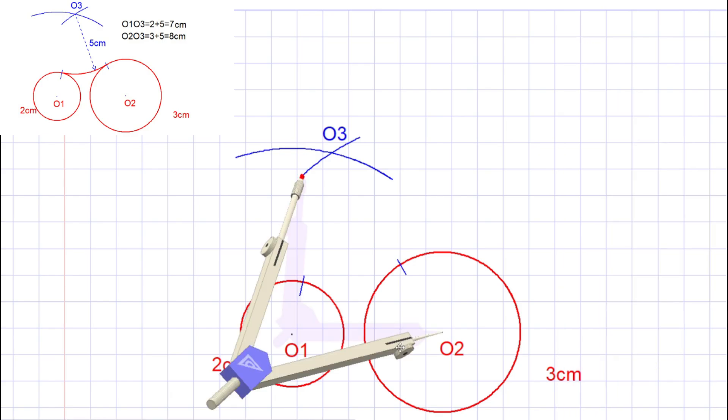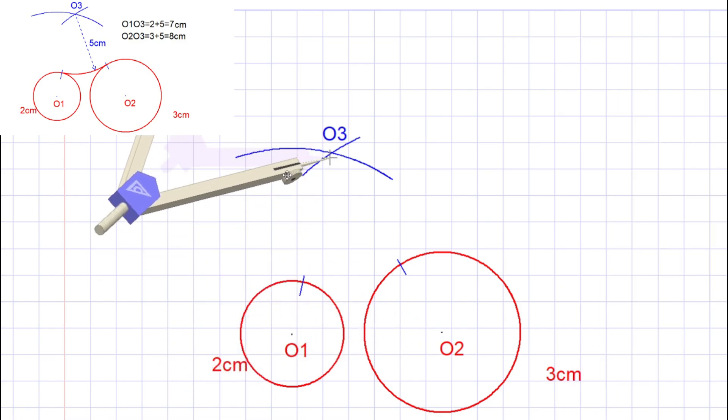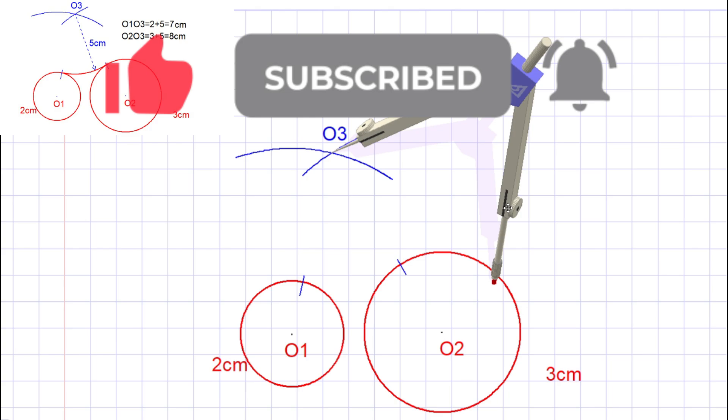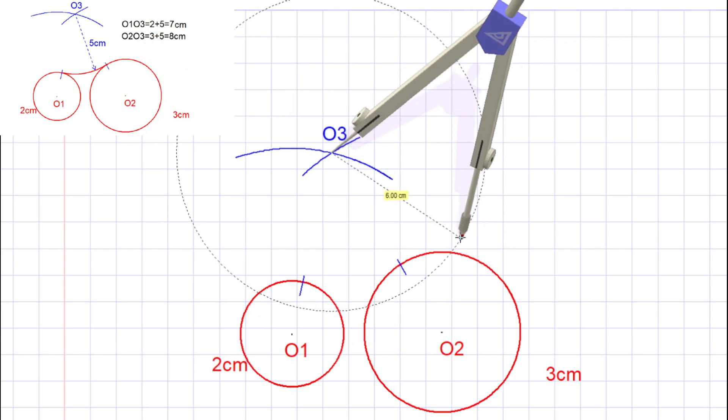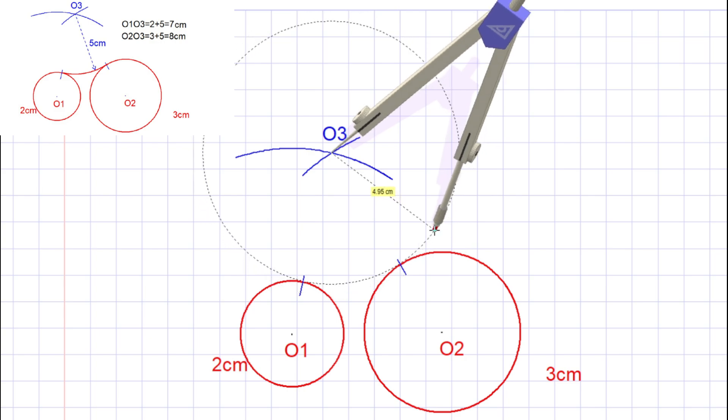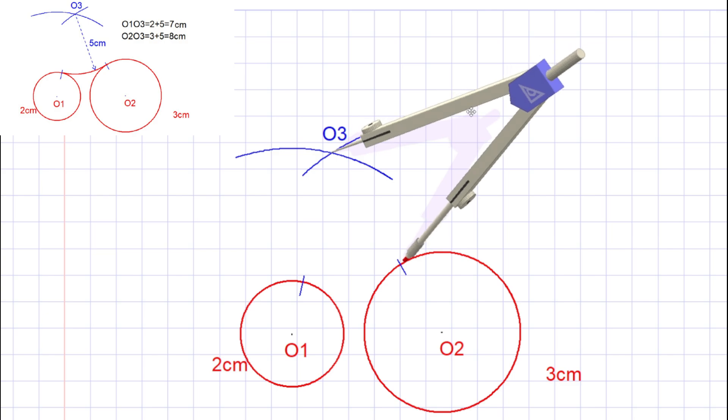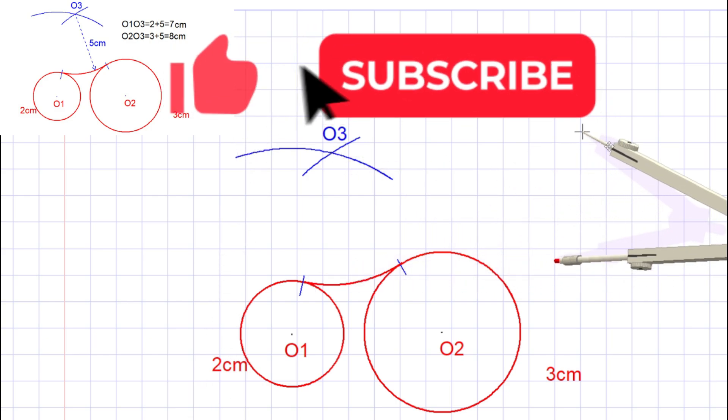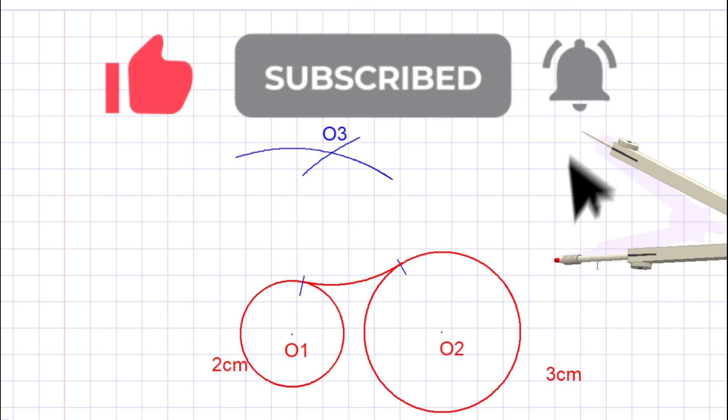Now we are ready to draw the arc. Take the compass and take 5cm to the compass, and draw the arc between the two marked start and end points by taking the center point as O3. This is how we are drawing an external tangent arc to two circles.